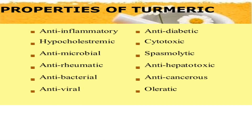Some properties of turmeric. It has various properties like anti-inflammatory, anti-diabetic, antimicrobial, anti-viral, antibacterial, anti-rheumatic, anti-cancerous, anti-hepatotoxic, cytotoxic, and many others. So these are some properties of turmeric.